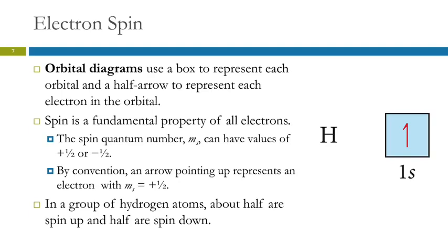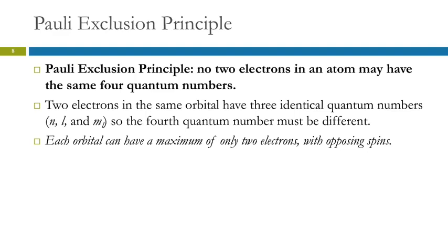If you took a bunch of hydrogen atoms and checked the spin of the electrons in them, roughly half would be spin up and half would be spin down — it's pretty much 50-50.